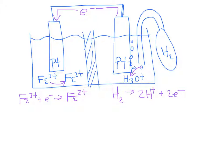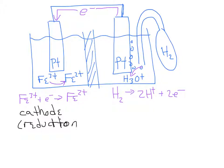What can we say about which one is the anode and which one is the cathode? The iron 3+ side is the cathode because reduction is going on — it's gaining electrons. OIL RIG: oxidation is loss, reduction is gain. So the platinum electrode in the iron solution is acting as the cathode. That means the platinum electrode in the hydronium solution is acting as the anode, because that's where oxidation is taking place.